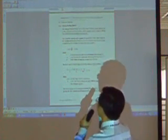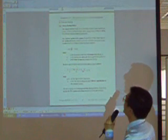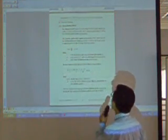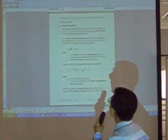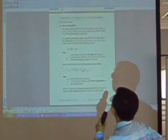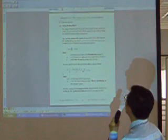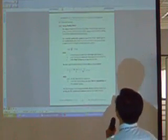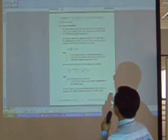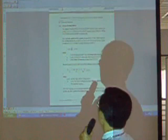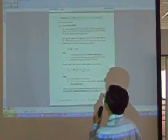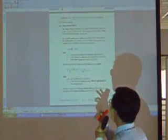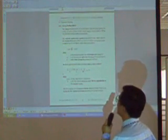Reservoir Routing. In Reservoir Routing, we are dealing with a continuity equation. The method that we are using is called Level-Full Routing. The Level-Full Routing method involves the solution of the continuity equation and the storage function. Reservoir Routing is the solution of two equations: one is the continuity equation and one is the storage function.